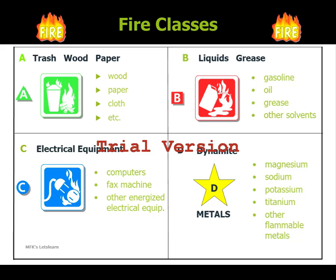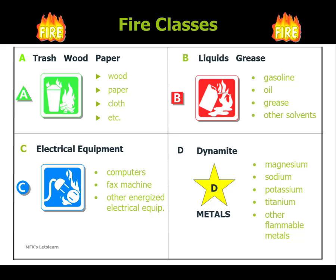Class C — 'C' stands for current or electricity. Anything that involves electricity is categorized under this classification. Examples are computers, fax machines, and other energized electrical equipment — anything that operates under electricity falls under this classification.